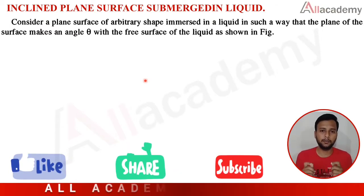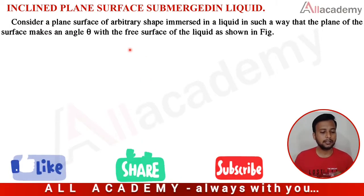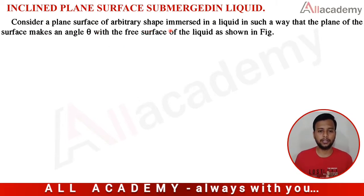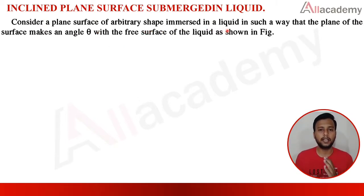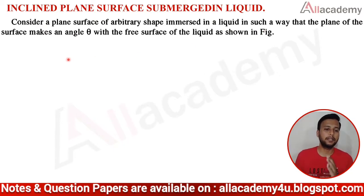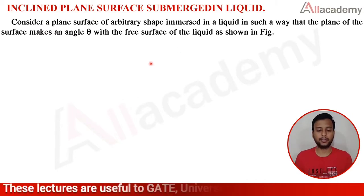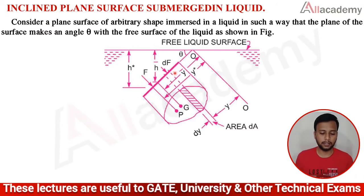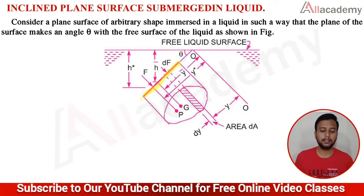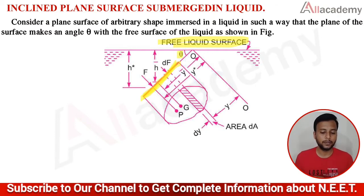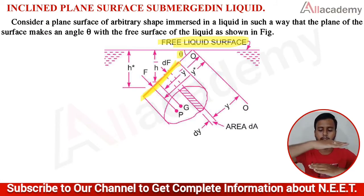Please take a pen and paper and keep it with you. Now let us consider a plane surface of an arbitrary shape immersed in a liquid in such a way that it makes an angle of theta with the free surface of the liquid, as shown in this figure. This is the plane surface which makes an angle of theta with the free surface of the liquid.